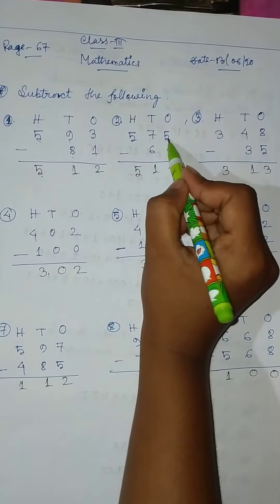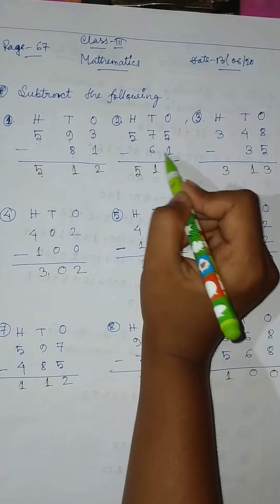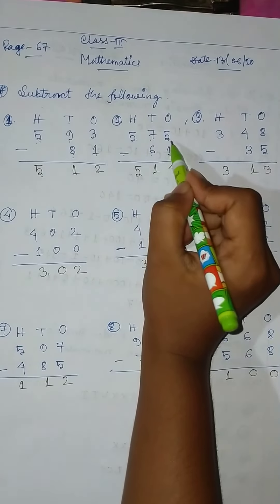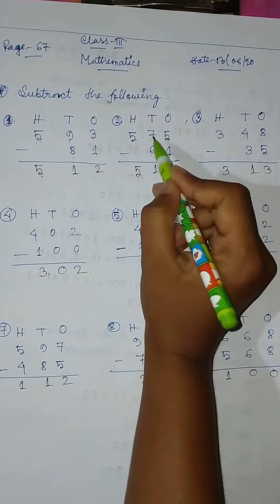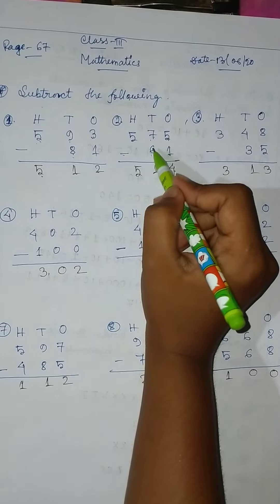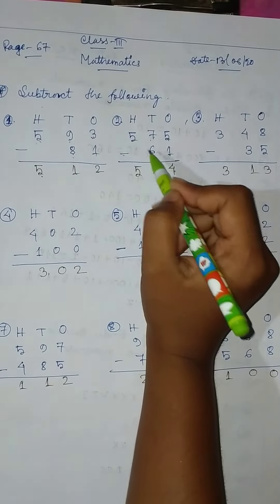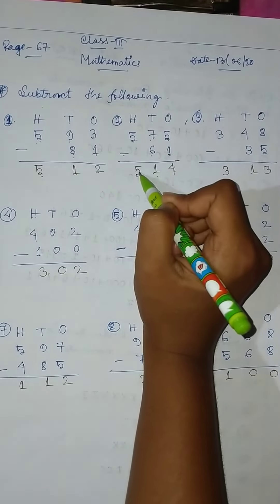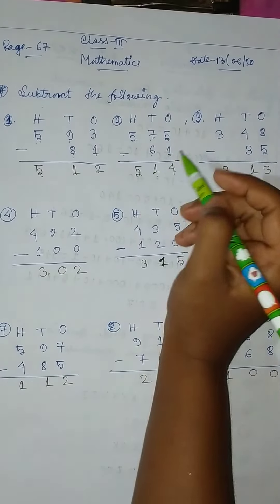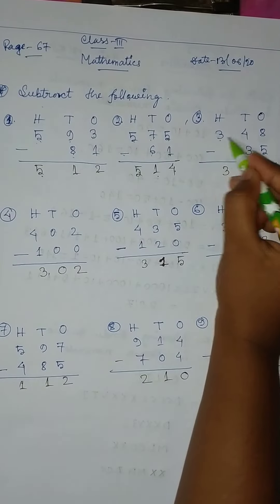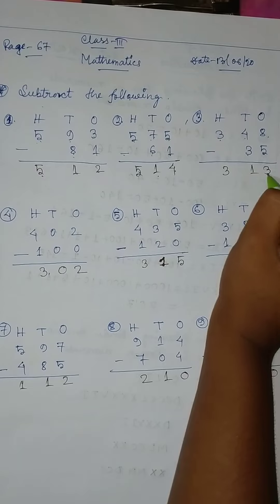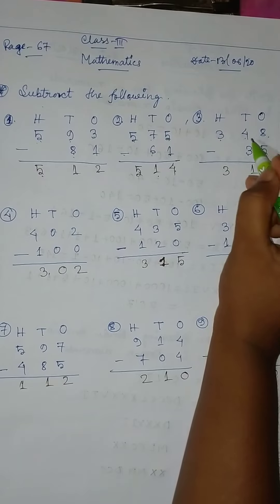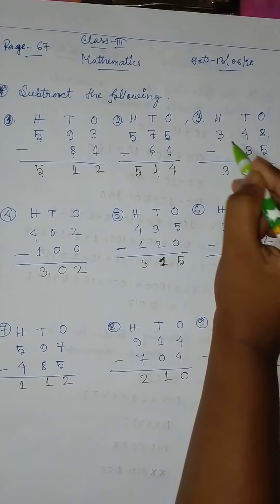575 minus 61: 5 minus 1 equal to 4, then 7 minus 6 equal to 1, 5. Okay, then 348 minus 35: 8 minus 5 equal to 3, and then 4 minus 3 equal to 1, 3.